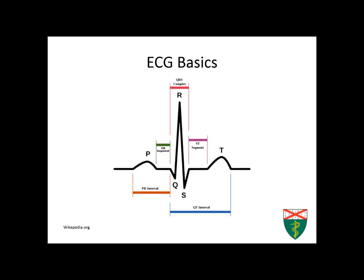To start off with the ECG, it's very important to know what the normal waveforms and the segments are called. First we have the P wave, which represents the depolarization of the atria. Basically you can think of depolarization as initiation of the electrical impulse to cause the muscle to contract. Then we have the QRS complex, which represents the depolarization of the ventricle.